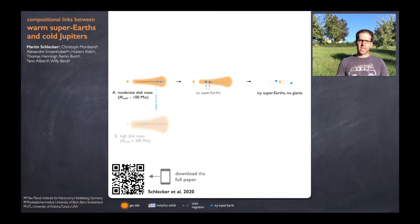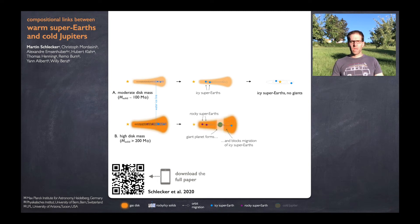If you have on the other hand a rather massive disk, several hundreds of Earth masses or more, you can form planetary cores further in and they migrate inwards to become dry super-Earths.